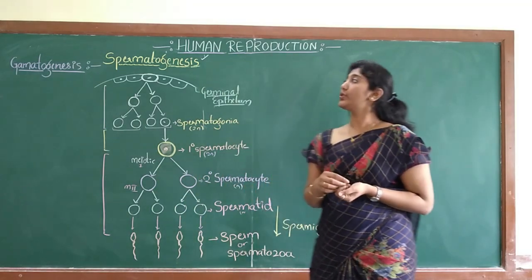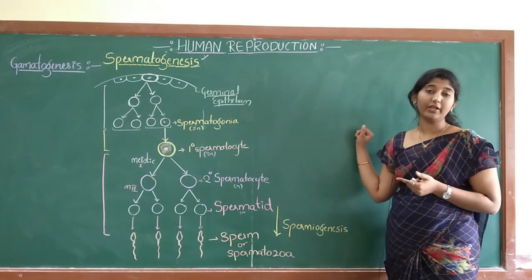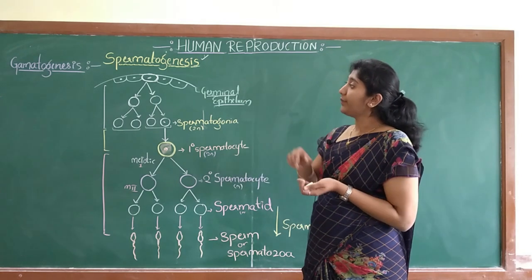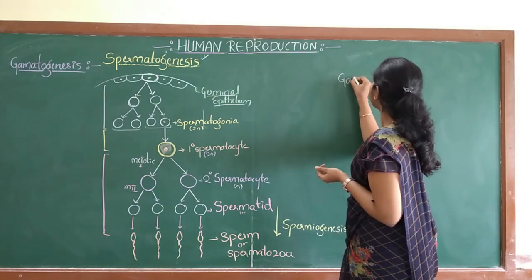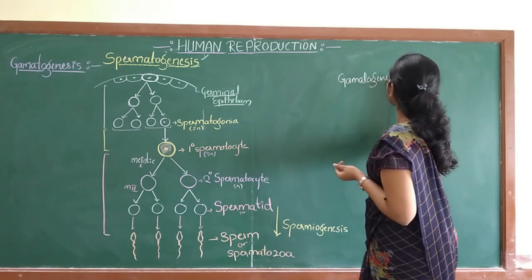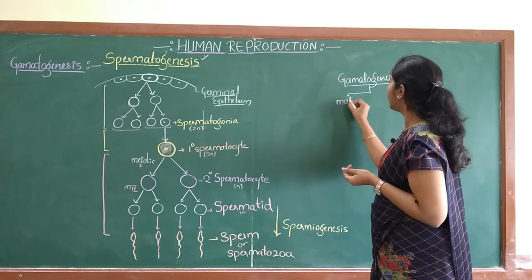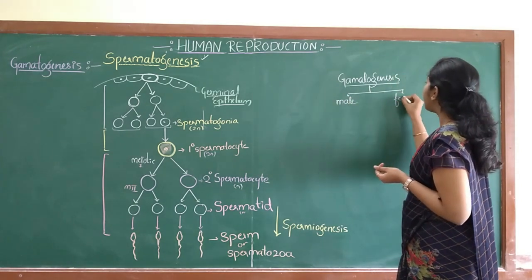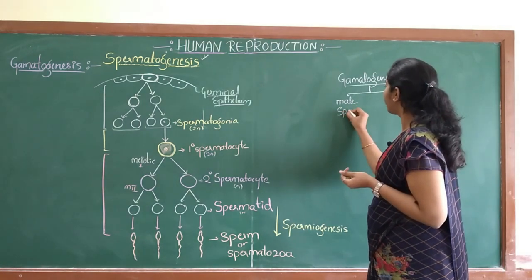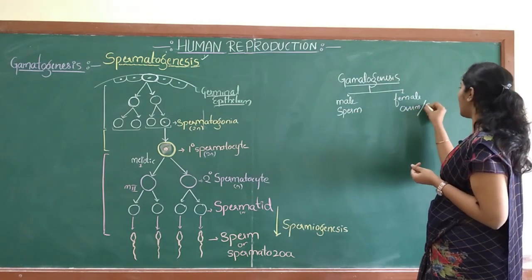Hello everyone, today we are going to study gametogenesis. In the previous class you learned the male and female reproductive system, and today we will learn how the gametes are formed. There are two gametes: one is the male gamete and the other is the female gamete. The male gamete is sperm and the female gamete is ovum, also called egg.